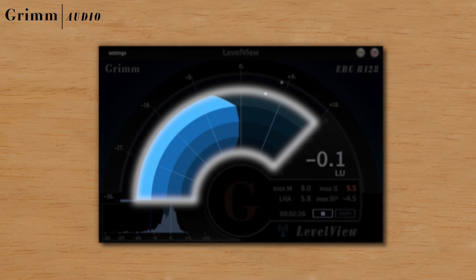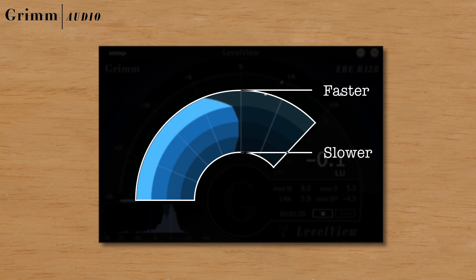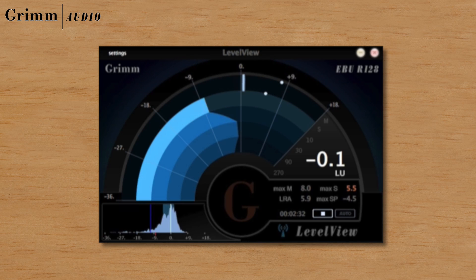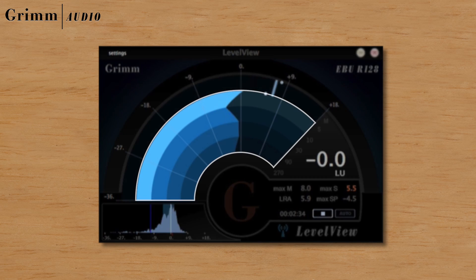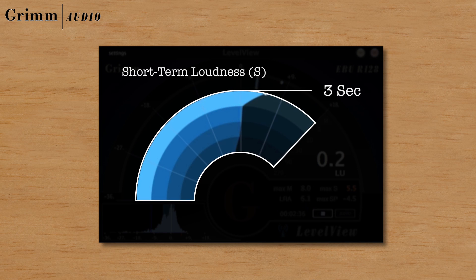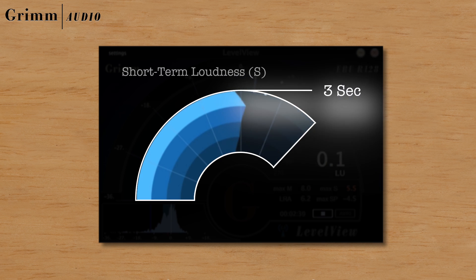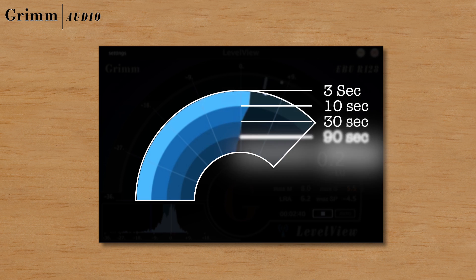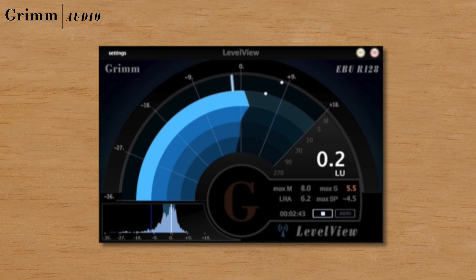Its rainbow meter shows fast and slow changes in loudness at a glance. The arches of the rainbow all have different integration times. The outer ring shows the short-term loudness, integrated over 3 seconds. Every step inward triples the time span. The rainbow meter helps you to hit target even when loudness is temporarily high or low.